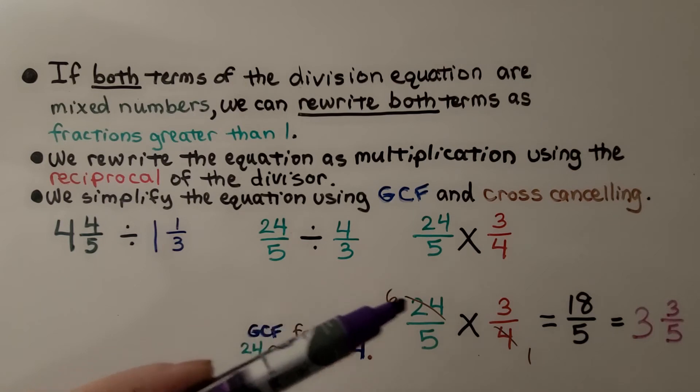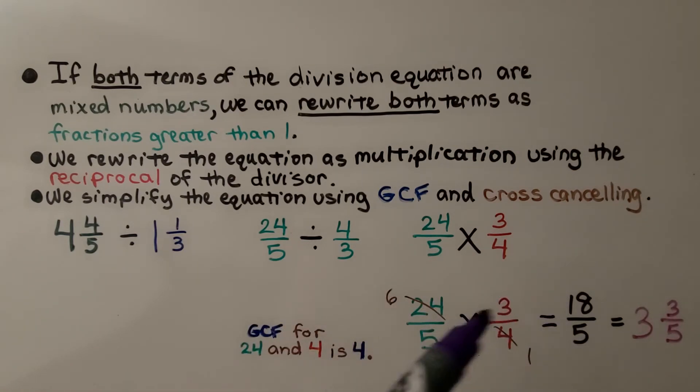Now we have 6×3 is 18, and 5×1 is 5. We couldn't cross cancel this way because 3 and 5 don't have a common factor. We have 18/5.